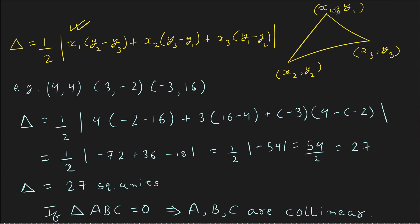For example, with points (4, 4), (3, 2), (−3, 16): Area = (1/2)|4(2−16) + 3(16−4) + (−3)(4−2)| = (1/2)|4(−14) + 3(12) + (−3)(6)| = (1/2)|−56 + 36 − 18| = (1/2)|−38|. Wait, computing carefully: = (1/2)|−72 + 36 − 18| = (1/2) × 54 = 27 square units. Since the area is not zero, these three points are not collinear.